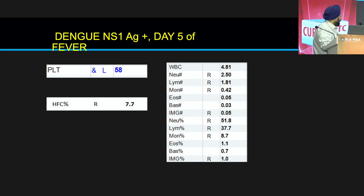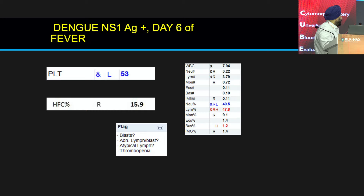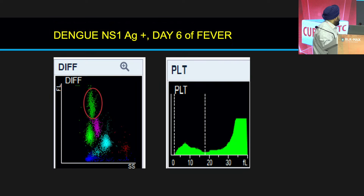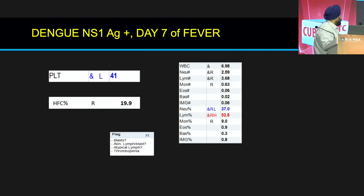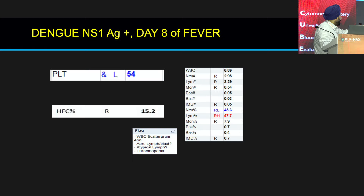On day 5, platelet count went down to 58,000 and HFC jumped to 7.7% — a 10-fold jump between day 4 and day 5. This jump in HFC is important in the prognosis of dengue, and the scatter plot shows much more density in the HFC area. On day 6, platelet decreased to 53,000 and HFC moved to 15.3% — only a 2-fold jump, as the maximum jump happened on day 5. On day 7, platelet further reduced to 41,000 and HFC jumped to 19.9%. On day 8, the platelet recovered to 54,000 and HFC went down to 15.2%.